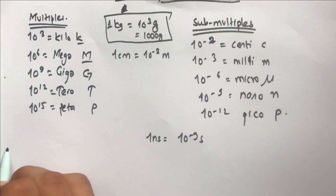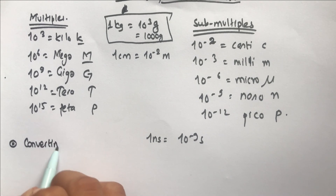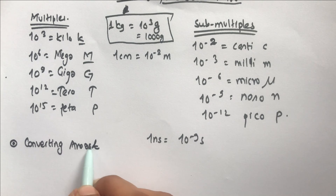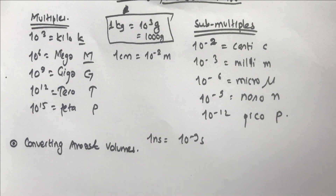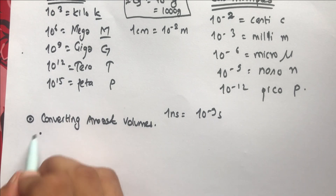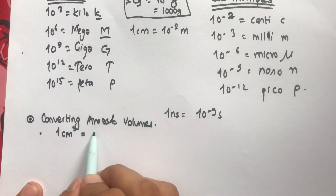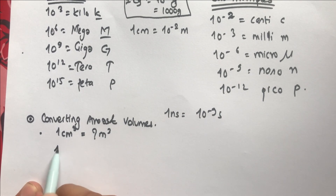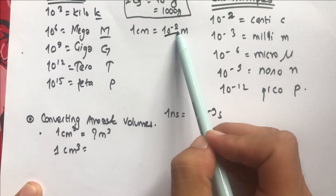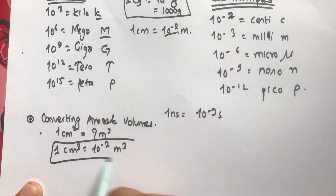Now let's focus on converting areas and volumes, as many students have problems with this. For example, suppose we have to convert one centimeter cubed to meter cubed. Many students are tempted to write that 1 cm³ equals 10⁻² m³ — since 1 cm = 10⁻² m — but this is absolutely incorrect.